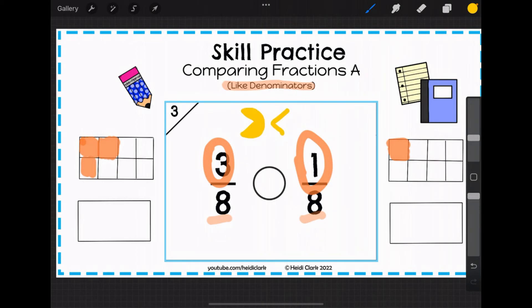And that Pac-Man is going to eat the bigger fraction. So we're going to draw our symbol with its mouth opening towards the bigger fraction, which is the three eighths.